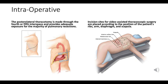Video-assisted thoracoscopic surgery, or VATS, is a minimally invasive surgical technique that utilizes a thoracoscope and specialized instruments introduced through small incisions rather than one large incision. Anatomical landmarks including ribs, arm, diaphragm, and scapula determine port placement. The goal of VATS is to achieve the same surgical outcomes as traditional open surgery, but with less pain, a shorter hospital stay, and quicker recovery.